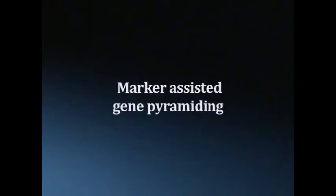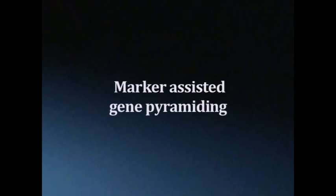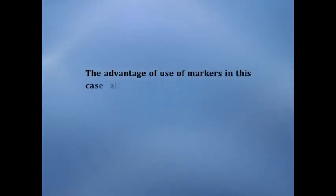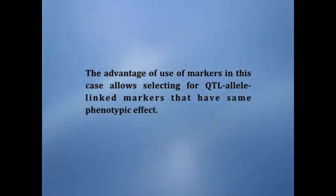Now we'll come to marker-assisted gene pyramiding. Gene pyramiding has been proposed and applied to enhance resistance to disease and insects by selecting for two or more genes at a time. For example, in rice, such pyramids have been developed against bacterial blight and blast. The advantage of using markers in this case allows selecting for QTL-linked markers that have the same phenotypic effect.